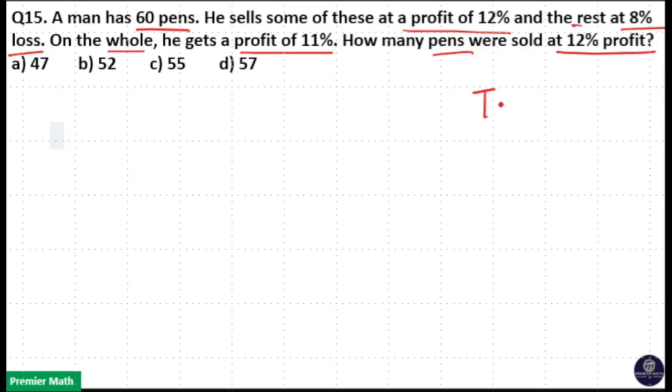So total number of pens is equal to 60. Some of these he sold at 12% profit, that means it is positive. Some rest is at 8% loss, that means it is negative. The result of all this process is 11% profit.